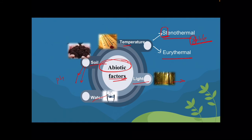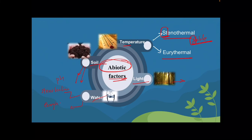Similar to temperature classifications, for water salinity we have stenohaline and euryhaline organisms. Stenohaline organisms can survive only at a stable, narrow salinity level. Euryhaline organisms can tolerate a wide range of salinity. Just as we have stenothermal and eurythermal for temperature, we have stenohaline and euryhaline for salinity.